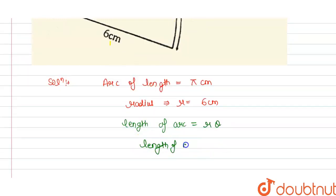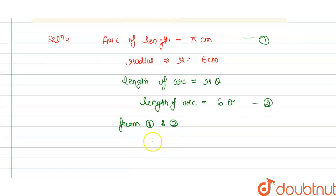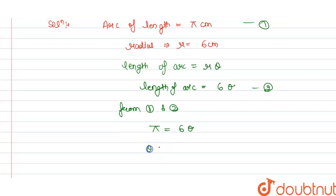that length of arc is 6θ, and this is given here as π. So this is first and this is second. So from (1) and (2), we can say that π is equal to 6θ, and we get θ is equal to π divided by 6.